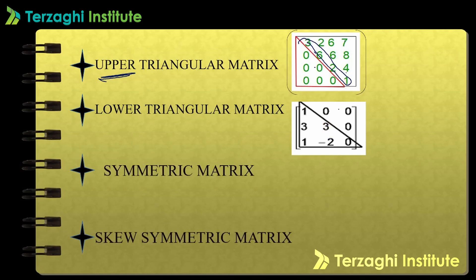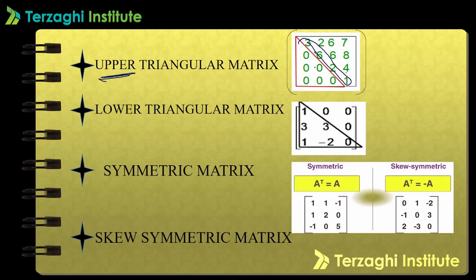Symmetric matrix and skew symmetric matrix. In a symmetric matrix, if you take the transpose of a matrix — meaning row and column interchange — you obtain the same matrix. That is, A transpose equals A.